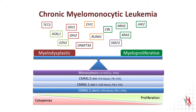The new WHO classification suggests that we distinguish between MDS-CMML and myeloproliferative CMML on the basis of the white blood count. In addition, CMML can be subgrouped based on the bone marrow blast percentage — actually a combination of the bone marrow blasts and the peripheral blood blasts — into CMML 0, CMML 1, and CMML 2, based on cut-offs that you can see on the screen.